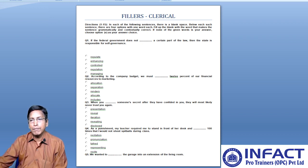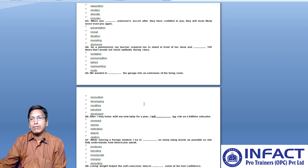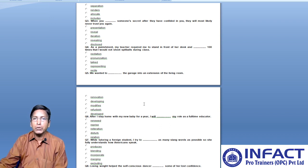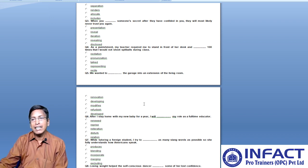Question number five: we wanted to dash the garage into an extension of the living room. Options are: renovation, developing, modifies, refurbish, and developed. The sentence means we are trying to enlarge or expand. The most appropriate word is refurbish, which means to renovate an existing item or redecorate something such as a building or structure.